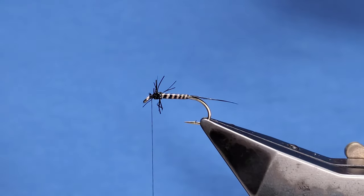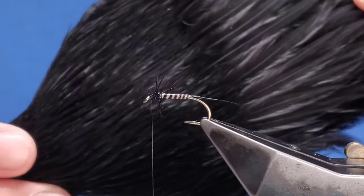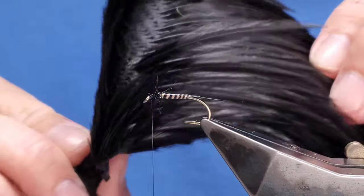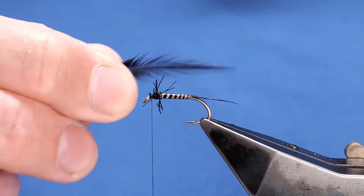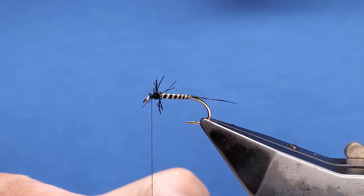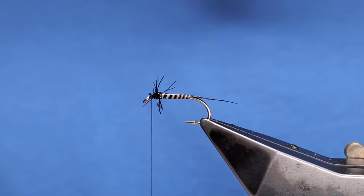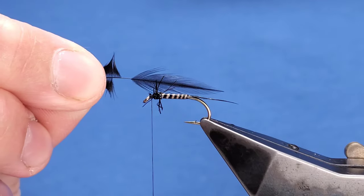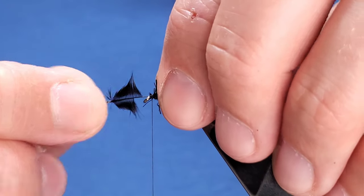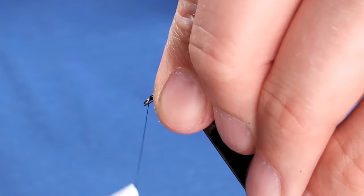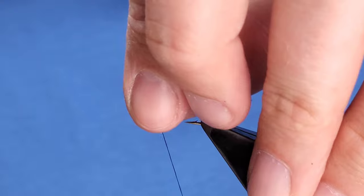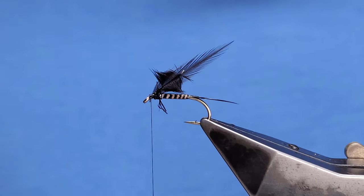For the hackle, this is a number two Metz hen neck dyed black. You can see it's been well used, plenty of usable fibers left in it. I've taken one from about a third of the way up my neck. This is for a 10. I've stripped away some of the flue from the stalk. Two to secure it, fold it, tie it back, a couple of turns.